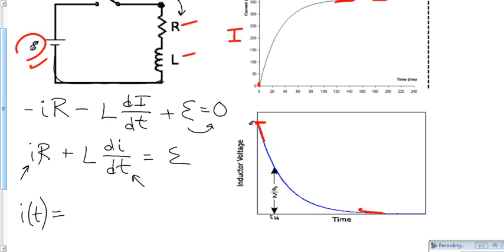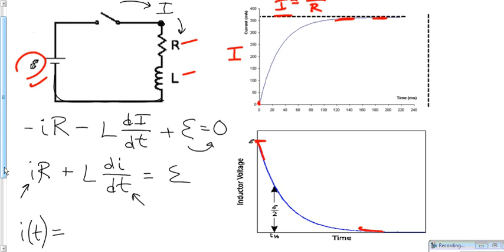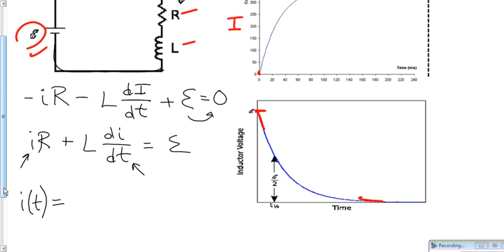This is what we call an exponential approach, and it always has kind of the same characteristics. There's some coefficient that ends up being the asymptote, what we're actually approaching. In this case, it's E over R. And then we've got 1 minus e to a negative, and then some power of T. What is that power of T? Well, it's 1 over a time constant, and the time constant for this kind of circuit is known as L over R.